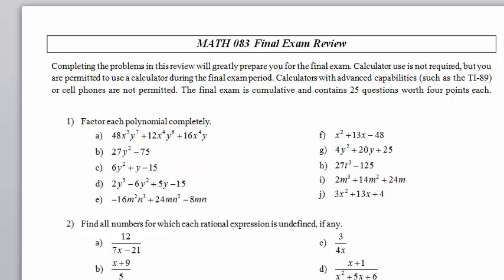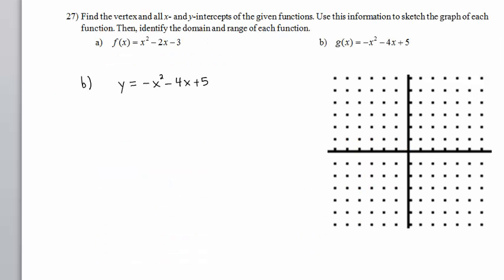Math 083 Final Exam Review, Problem 27 Part B. We must graph the parabola given by this equation. We will do so by determining its vertex, its x and y intercepts, and plotting those points. In Part B, we are going to graph the parabola whose formula is given by y equals negative x squared minus 4x plus 5.